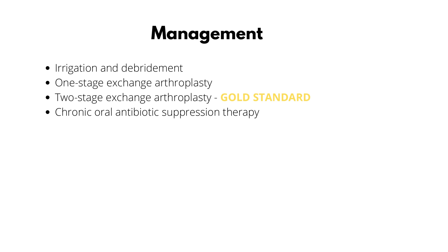Two-stage exchange arthroplasty has been used more commonly over the past few years. In the first stage, there is complete resection of foreign material, debridement of infected tissue, and placement of a cement spacer incorporated with antibiotics. Spacers allow for joint stability and prevent soft tissue contractions. In the second stage, any remaining necrotic tissue and the spacer are removed, the joint is thoroughly irrigated, and new prosthetic implants are placed. Antibiotics can be used after re-implantation in a two-stage procedure, but chronic antibiotic suppression can be reserved for immunocompromised patients who are unable to undergo surgery.